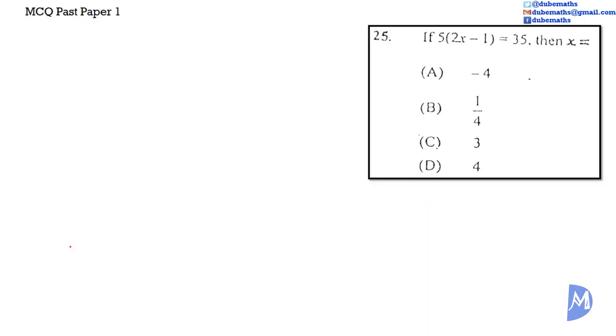Question 25. If 5 multiplied by 2x minus 1 is equal to 35, then x is equal to: is it A: negative 4? Is it B: 1 quarter? Is it C: 3? Or is it D: 4?